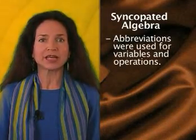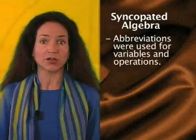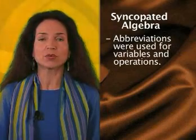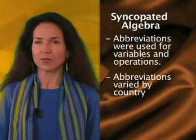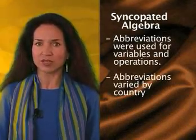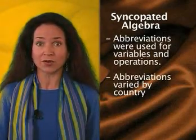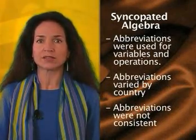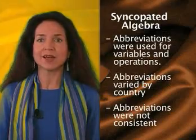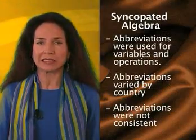The second stage is called syncopated algebra. Here we begin to see abbreviations for unknown quantities and for frequently used operations, but they varied from country to country as each country created its own. Syncopated algebra was not consistent, as it did not follow clearly stated rules.